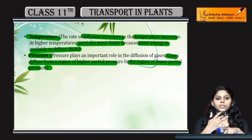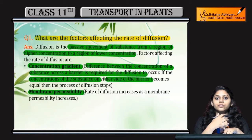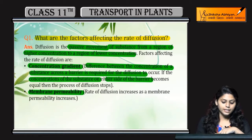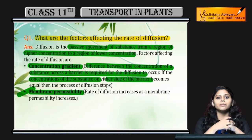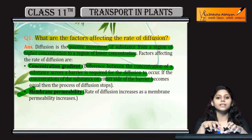So the 4 main factors that affect the rate of diffusion are: pressure, temperature, concentration gradient, and membrane permeability.